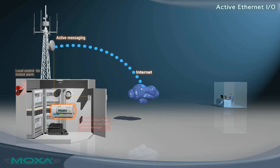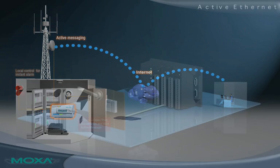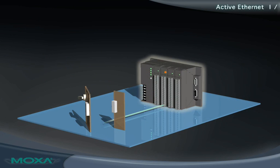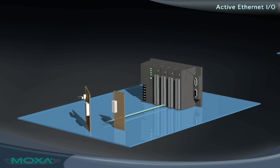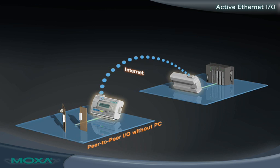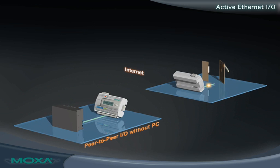Since the I.O. server handles the monitoring of attached sensors, it can transmit a message instantly when user-specified conditions are met. With peer-to-peer I.O. communication, signals are easily transmitted between I.O. devices over Ethernet. Both digital and analog signals can be transmitted between I.O. servers without a PC or master PLC.